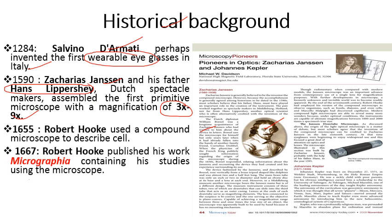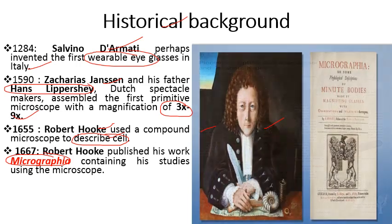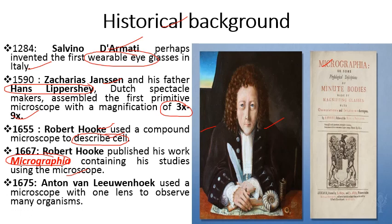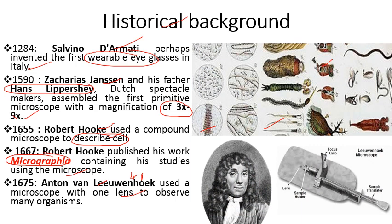In 1655, Robert Hooke used a microscope to describe the cell and was the first person to observe the cell. In 1667, Robert Hooke published his work Micrographia, containing his studies using the microscope. In 1675, Anton van Leeuwenhoek was the first person to observe living cells. He used a simple single-lens microscope and was the first to observe living cells such as bacteria, sperm cells, and blood cells.